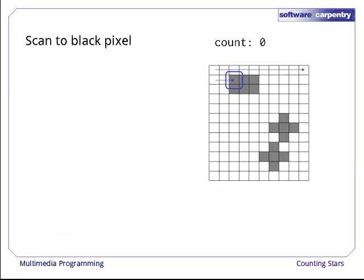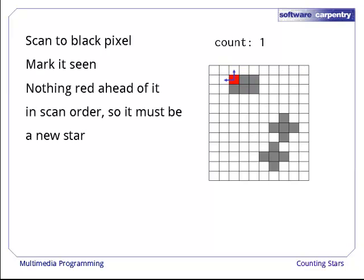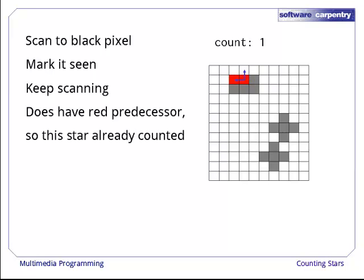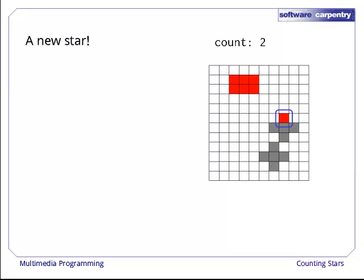A picture will make this clearer. We scan the image until we find a black pixel and mark it as seen by turning it red. Since nothing above it or to its left is already red, it must be the first pixel in a new blob, so we increment our star counter and keep scanning. This pixel does have a red predecessor, the one we just colored in, so it's not the start of a new star. Eventually we have colored in all of this star and we move on to the next.